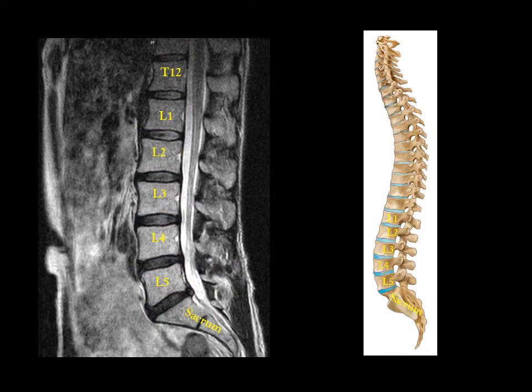This MRI shows a few disc variations, marked by the red arrows. The smooth line, which was discussed in the last slide, is interrupted by the disc protruding into the spinal canal. A disc variation is when the softer inner layer of cartilage in the disc, called the nucleus pulposus, protrudes out of the tougher exterior layer, called the annulus fibrosus.